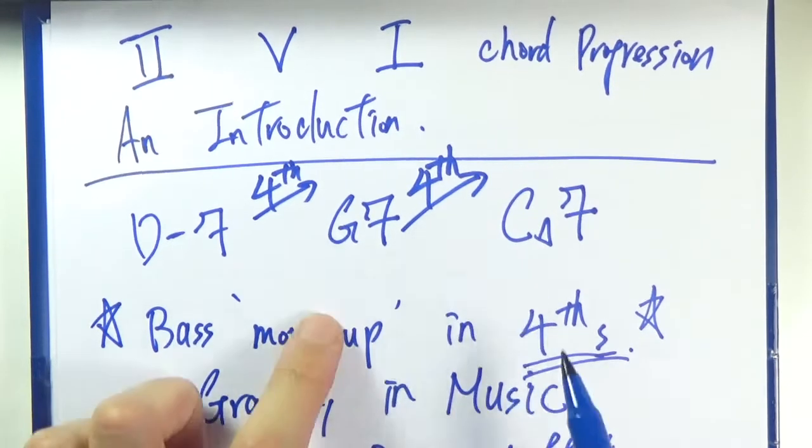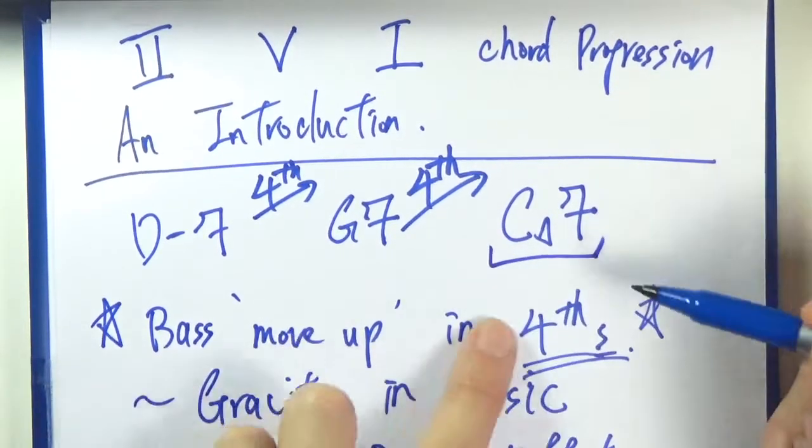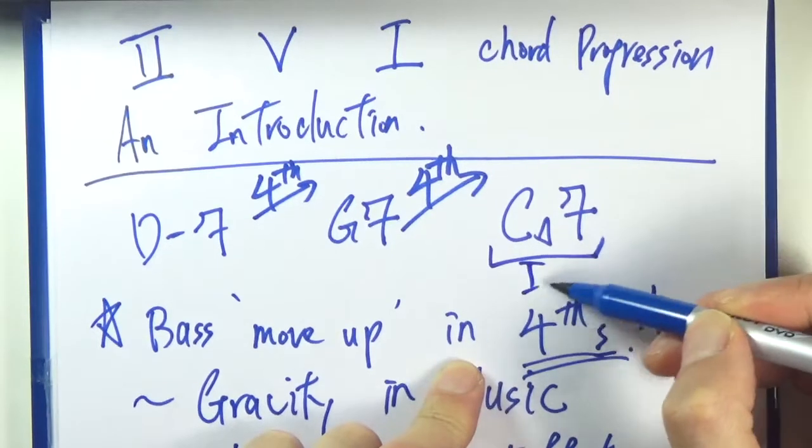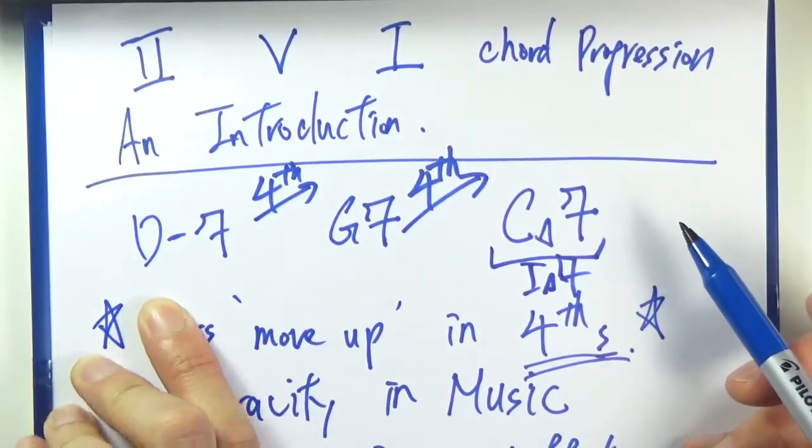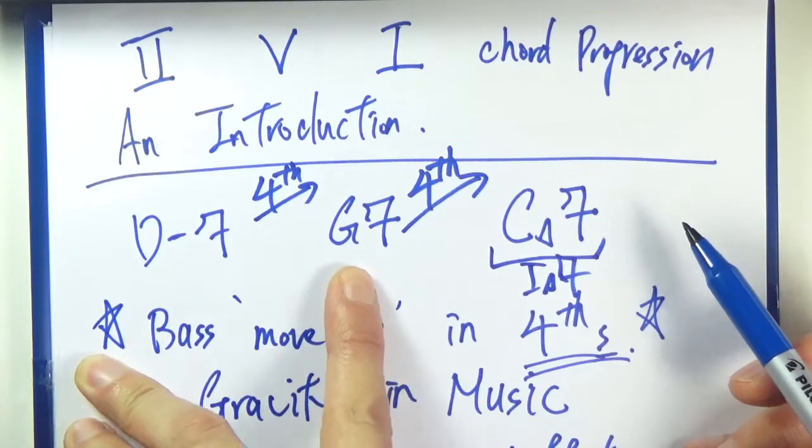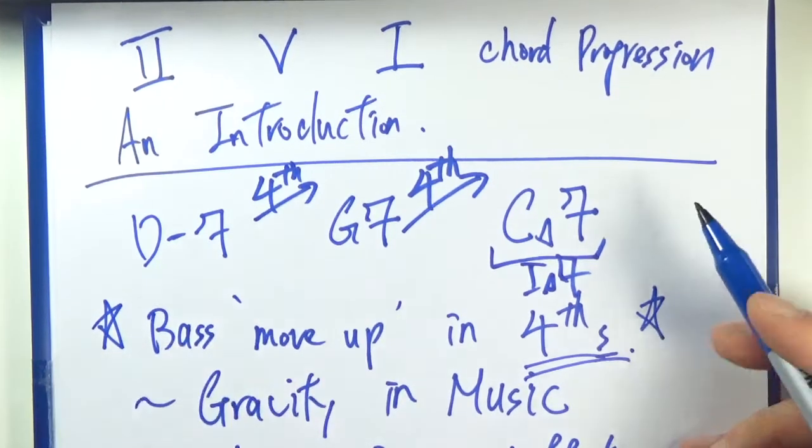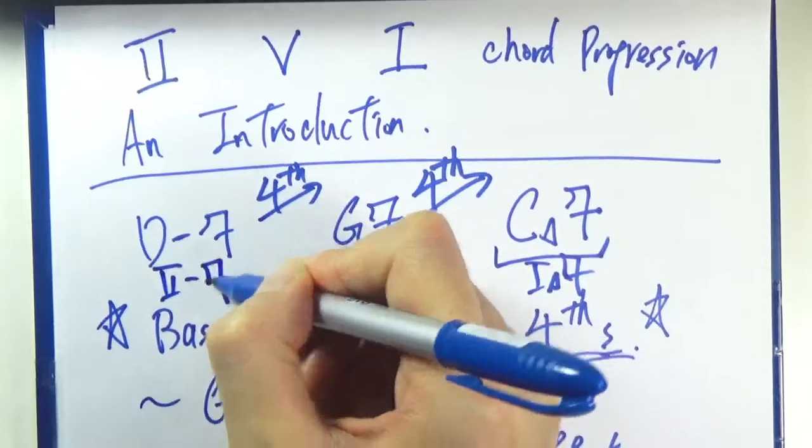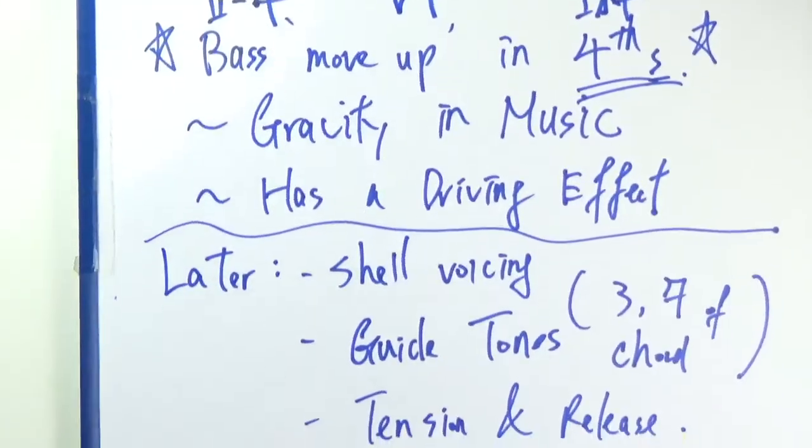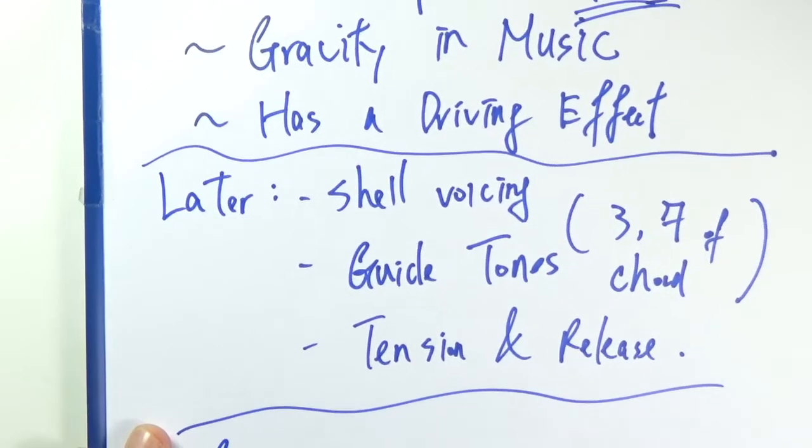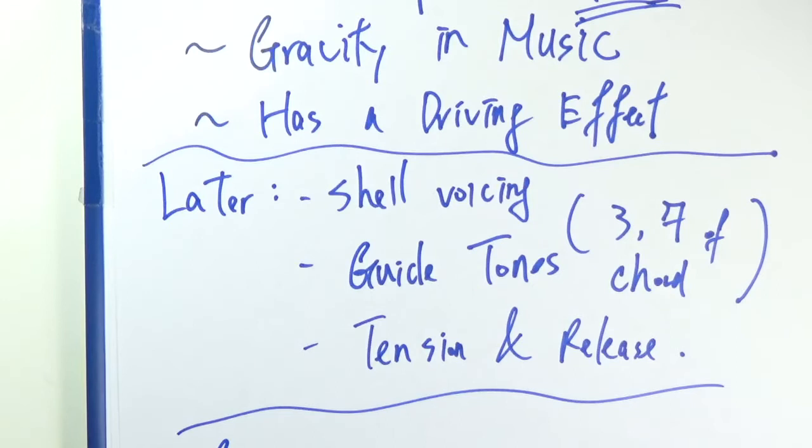2, 5, 1 - if we were to stop on a one chord, say C major, then we have a 2 minor chord and we will also get a 5 dominant 7 chord. And later on we will learn more about shell voicing and guide tones, and also tension and release.